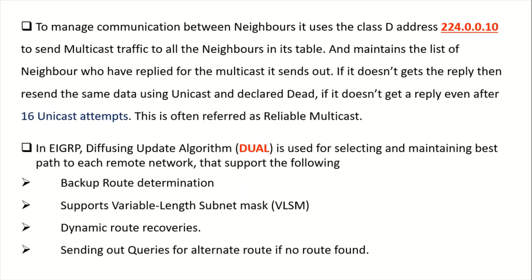EIGRP makes use of the DUAL algorithm. Because of this, it provides backup route determination, supports VLSM and dynamic route recovery, and sends out queries for alternate routes if a main route goes down.